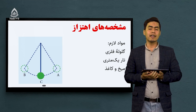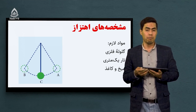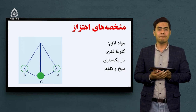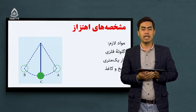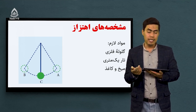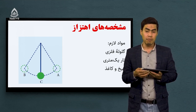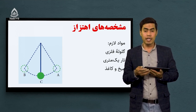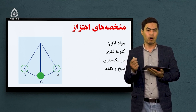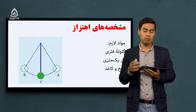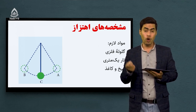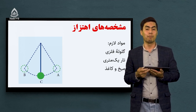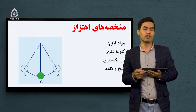اگر ما بخواییم مشخصه‌های یک حرکت را بدانیم نیاز داریم به یک وسیله دیگه. در فیزیک وسیله‌ای داریم به نام رقاصه ساده. برای اینکه رقاصه ساده را ایجاد کنیم به چه موادی نیاز داریم؟ یک گلوله فلزی، یک تار یک متری، میخ و کاغذ. روی تخت سیاه نگاه کنید که ما این رقاصه ساده را چطور ایجاد میکنیم تا روی آن مشخصه‌های ارتعاز را بررسی کنیم.